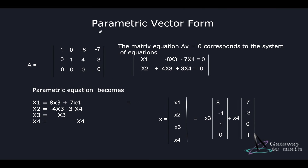Let's take an example of representing a vector in parametric equation form for a homogeneous system — that is, equating the matrix with a zero entry on the right-hand side. The matrix here has first row: 1, 1, 0, -8, -7; second row: 0, 1, 4, 3; and all zeros in the third row. Note that this matrix is already in row reduced echelon form — that's the first important step to check.